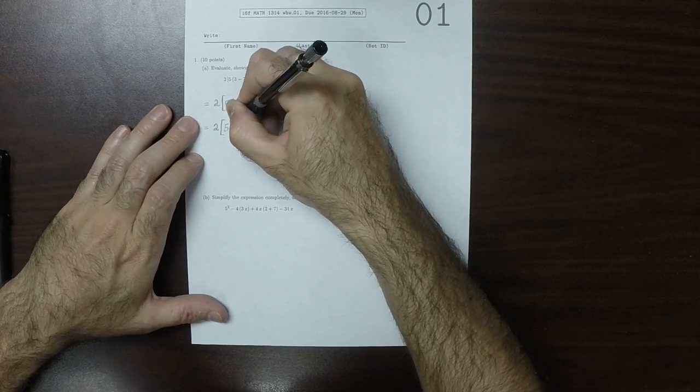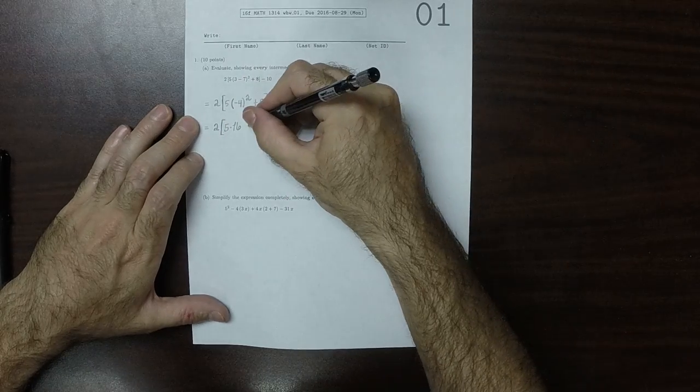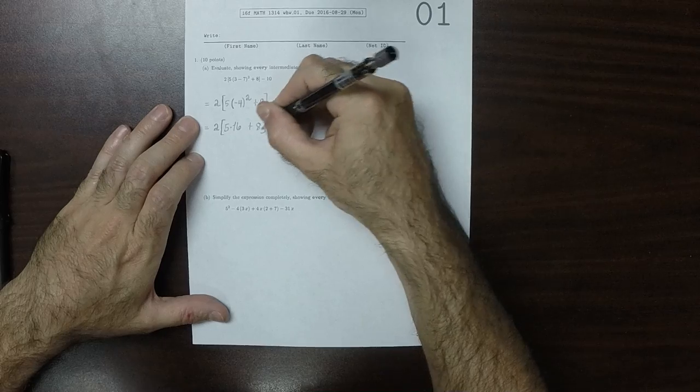So 5 times 16, because that's negative 4 squared, plus 8 minus 10.